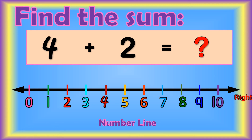Let's have some more examples. Find the sum of 4 plus 2. We start from the bigger number, which is 4. Then we jump 2 numbers to the right: 1, 2. We land on 6. So the sum of 4 plus 2 is 6.